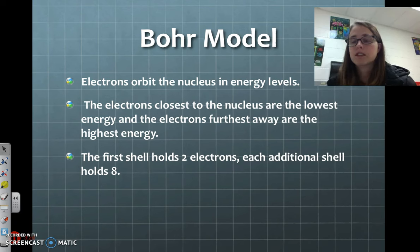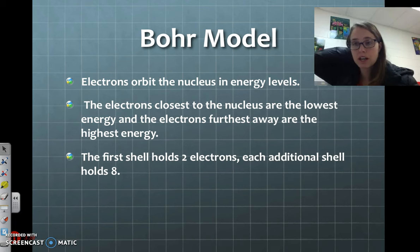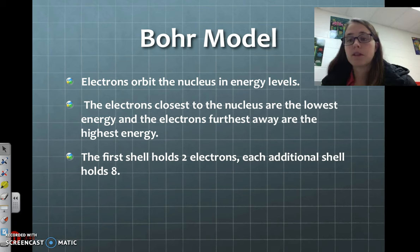If you remember space, we talked about how the closer planets are going to be more gravitationally drawn to the sun. Well, the same thing happens for the electrons that are orbiting the nucleus. The electrons that are closer to the nucleus are more easily drawn to orbit the nucleus.